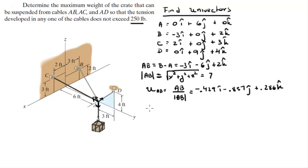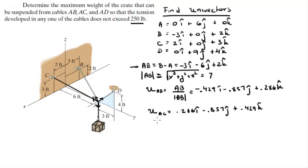We also need to find unit vectors AC and AD in the same manner — just find the vector, then the magnitude, then divide. You should get that unit vector AC equals (0.286i - 0.857j + 0.429k), and unit vector AD equals (0.0i + 0.6j + 0.8k).